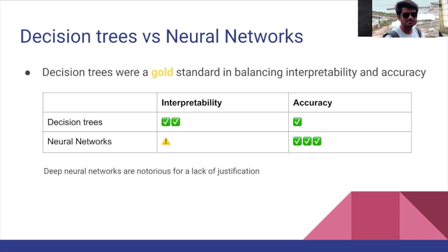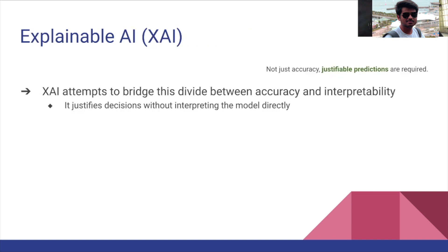Before deep learning — and by the way, this is not to scale, just to show how accurate these networks are — decision trees were the gold standard for accuracy and interpretability. Now deep learning models are very good at accuracy but notorious for the lack of justification. What explainable AI attempts is to bridge this divide between accuracy and interpretability. But as we'll explain in the coming slides, XAI justifies decisions without interpreting the actual model.